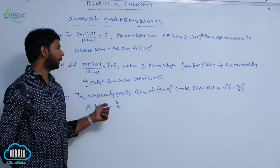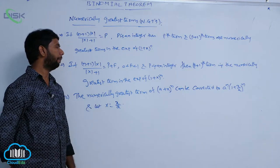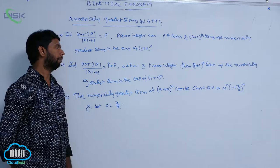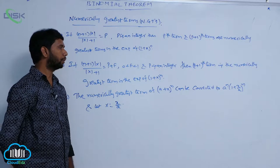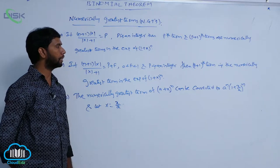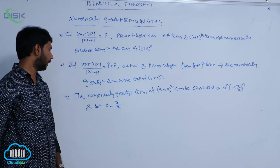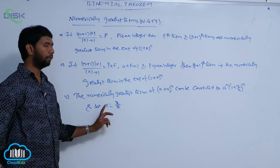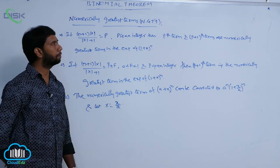The numerically greatest term of (A + X)^N can be converted to the form A^N into (1 + X/A)^N, and let X equal X by A.